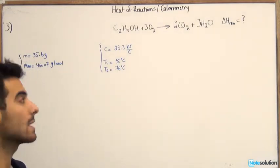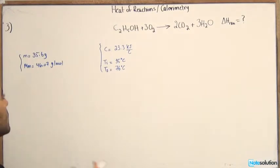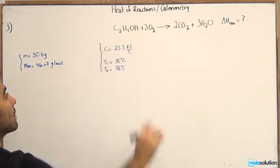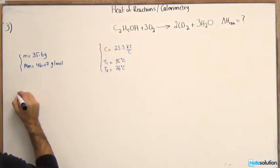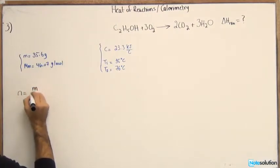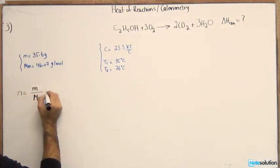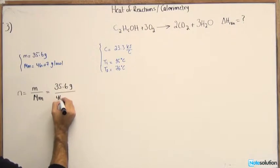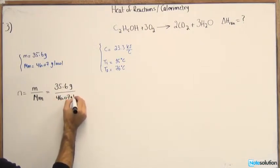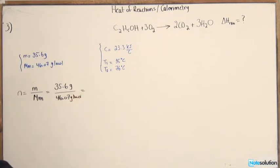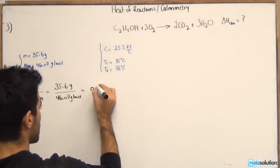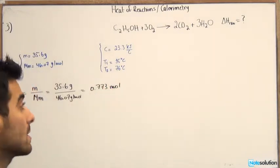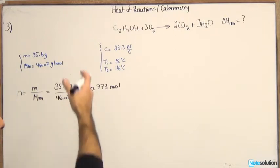So how do we go along doing this question? The first thing we need to find out, of course, is the number of moles of the reactants that we have. So the number of moles of the ethanol would be n equals mass over molar mass. That would give you 35.6 grams over 46.07 grams per mole. So if you do the calculation, you should end up with 0.773 moles. So now we found the number of moles of the reactants.